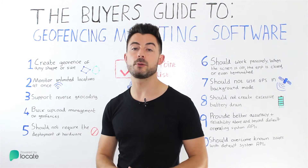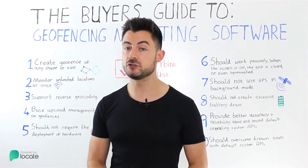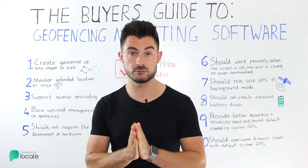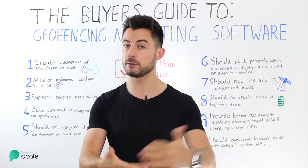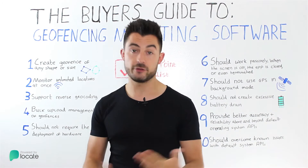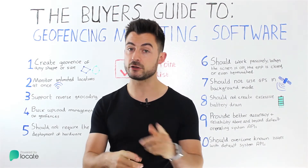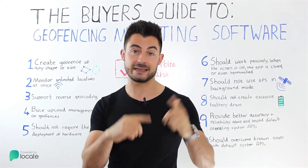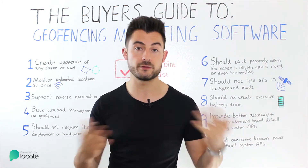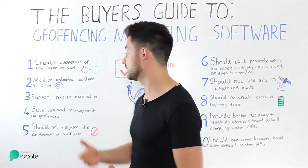Number three: make sure your provider supports reverse geo-encoding. What this means is that you as a business can supply the provider with a list of addresses for your locations, and the provider has the ability to turn them back into latitude and longitude, thereby automating the creation of all the fences for your own locations.